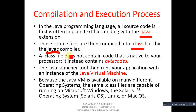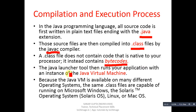A dot class file does not contain code that is native to your processor — it instead contains bytecode. So the dot class file is known as bytecode. After compilation of a Java program we receive bytecodes, and those bytecodes are saved with the dot class extension.